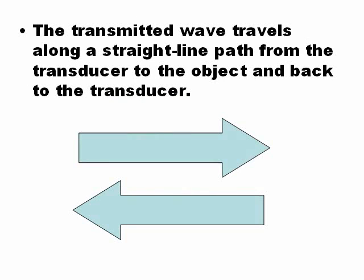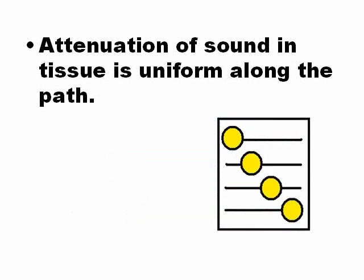One of the first assumptions is that ultrasound travels along a straight line — but not always does ultrasound travel in a straight line. The second assumption is that attenuation depends only on depth. Not always is attenuation dependent on depth alone; it also depends on the structures present in the soft tissue.